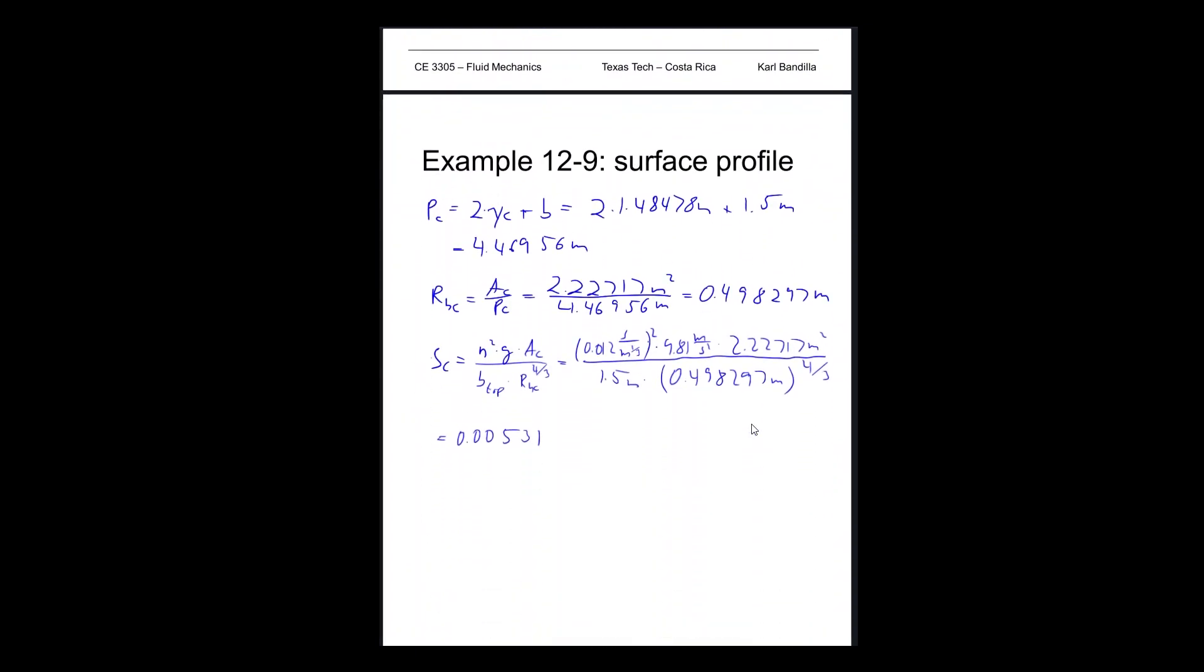Now, in this case, the slope that we were given was 0.06. So we know that for our table, we know that S0, the one that we're given, is greater than the critical slope. So that means it's a steep slope. And that steep slope is the S. So we know that. So we know at least what general category we're in.